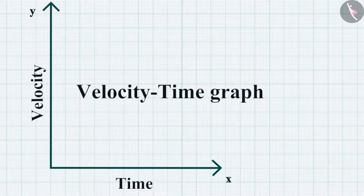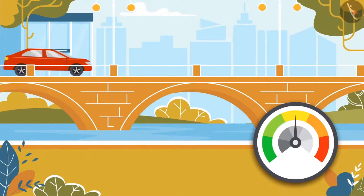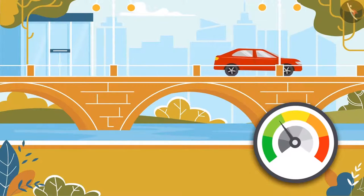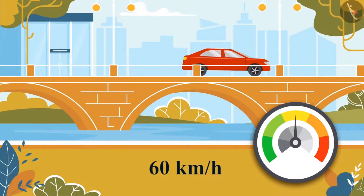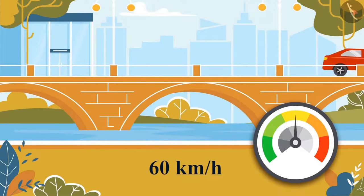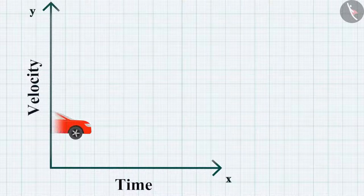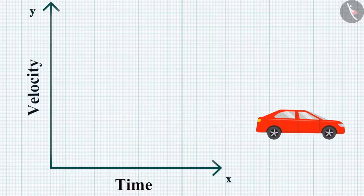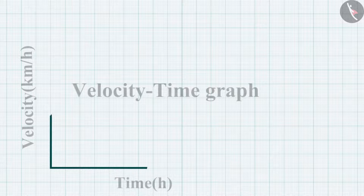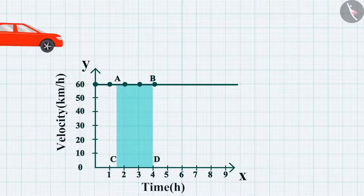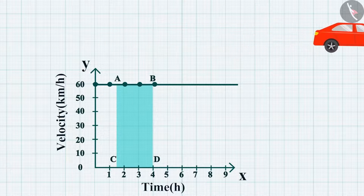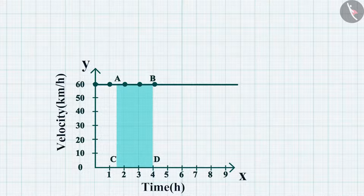Now, let's study the velocity-time graph. The variation in velocity with time for an object moving in a straight line can be represented by a velocity-time graph. Suppose a car is moving at a uniform velocity of 60 kilometers per hour in a certain direction. The velocity-time graph of that car can be plotted by considering the velocity at certain time instants. Here, time and velocity are represented along the x-axis and y-axis respectively. As the car is moving at a uniform velocity, the height of its velocity-time graph will not change with time. It is a straight line parallel to the x-axis.